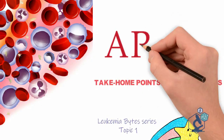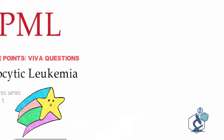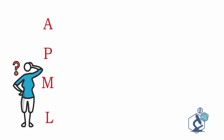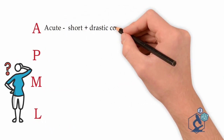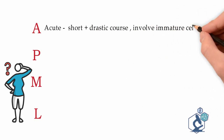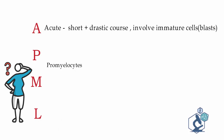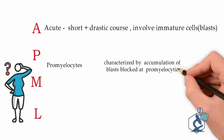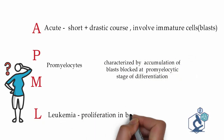Today we will be discussing APML, that is Acute Promyelocytic Leukemia. There are four letters: A, P, M, and L. A stands for acute, to signify its short and drastic course. P and M make up promyelocytes, characterized by accumulation of blasts blocked at the promyelocytic stage of differentiation. L stands for leukemia — proliferation of these cells in the bone marrow and bloodstream.